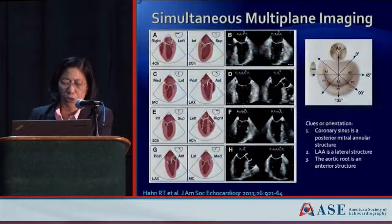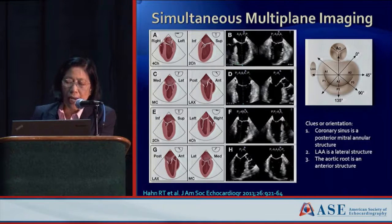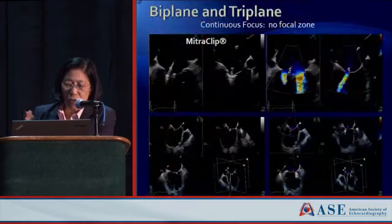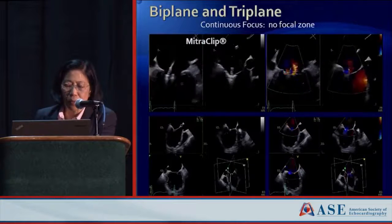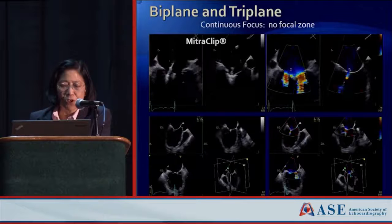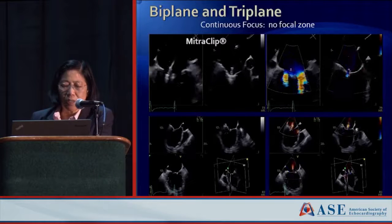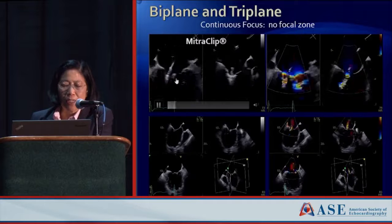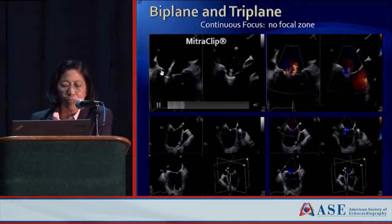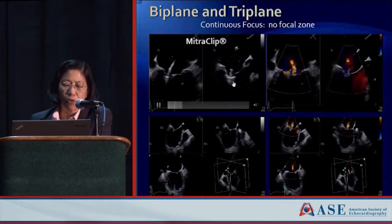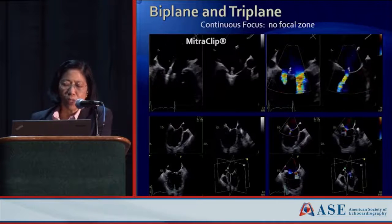For 3D imaging, we frequently use a simultaneous multi-plane image, and the secondary image defaults to being exactly orthogonal — 90 degrees — but you can vary it. The E95 also has the triplane mode, so you have not only biplane but a third plane. This is shown with a mitral clip — you can simultaneously see the location of your clip in the lateral-to-medial space as well as focus on the clip arms in the AP direction.